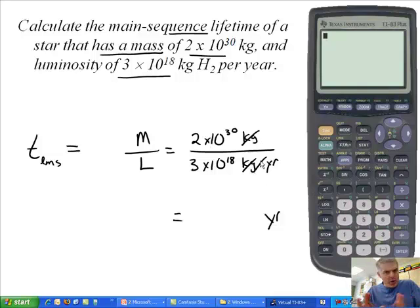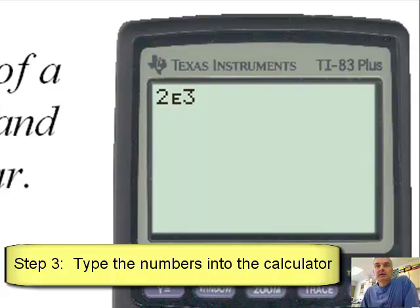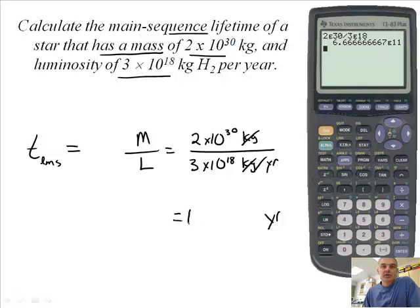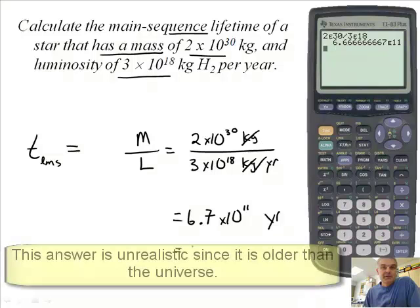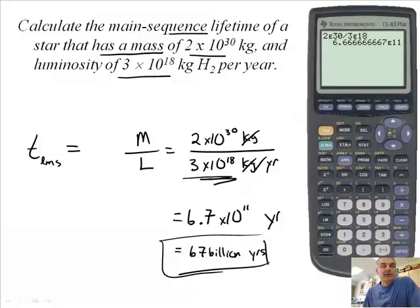Let's look at our calculator. When I'm typing numbers into my calculator, do I push the times button? No! Do not push the times button. You're going to push the ee button. I'm going to say 2, second function, double e, 30, divided by 3, second function e, 18. Enter. And I get 6.7 times 10 to the 11th years. That's 67 billion years. That's longer than the universe has been around. Probably my numbers are a little off. Probably this number should have been a higher number. That's how you do the math.